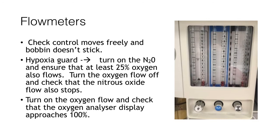At this point you should also check the hypoxia guard. This is where you turn on nitrous oxide and by visualising the flow meter you can see that at least 25% oxygen will also flow to prevent a hypoxic mixture being delivered to the patient. If you then subsequently turn the oxygen flow off, we should see that the nitrous oxide flow will also stop. We should also turn the oxygen flow to maximum and check that the oxygen analyser displays that it is approaching 100%, ensuring that this is correctly working.